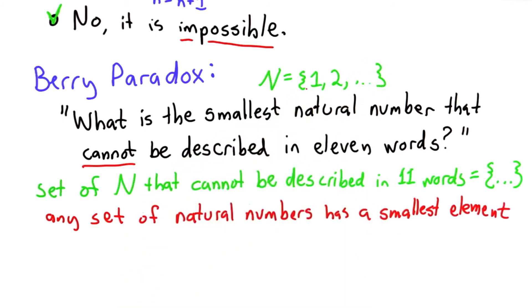The numbers are well ordered, so whatever that set is, there must be some smallest number. So that means there should be an answer to this question, that there is a smallest number that cannot be described in 11 words.